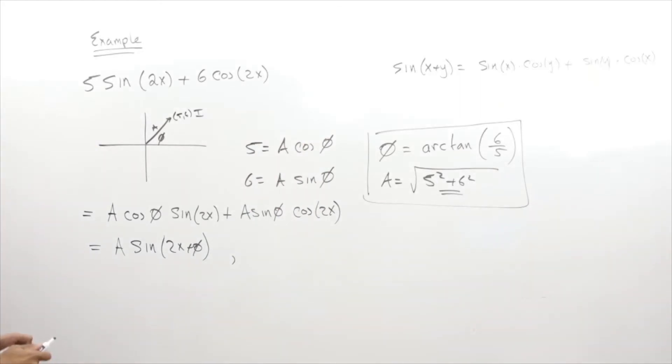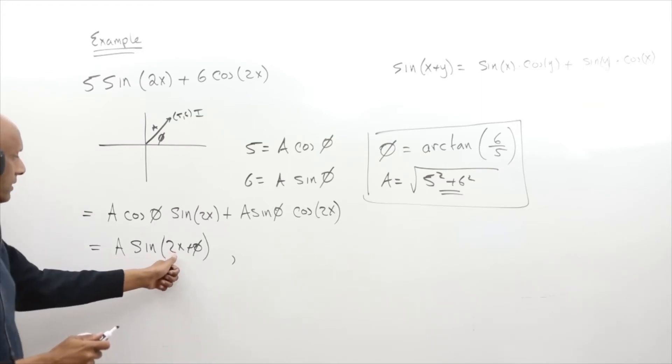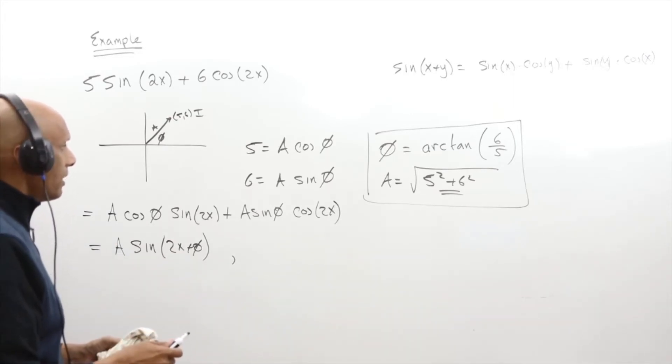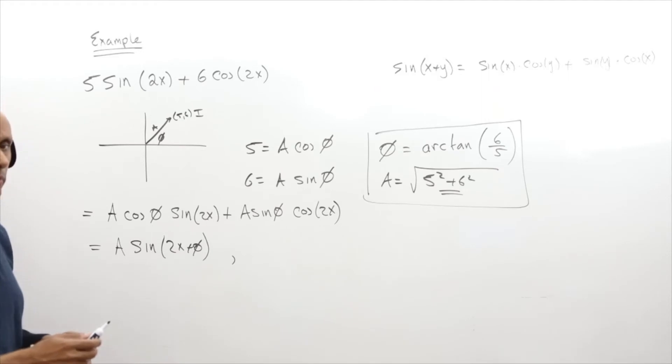So I've taken 5 sine of 2x plus 6 cosine of 2x and converted it into a sine function in terms of a sine and a double angle formula. I know the phase angle is arc tangent of 6 over 5 and the amplitude is square root of 5 squared plus 6 squared.